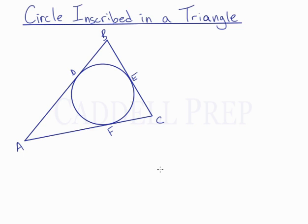Let's go over some of the things that happen when we have a circle inscribed in a triangle. So here we have a triangle ABC, and we have this circle inscribed in it, and it's tangent at points D, E, and F.